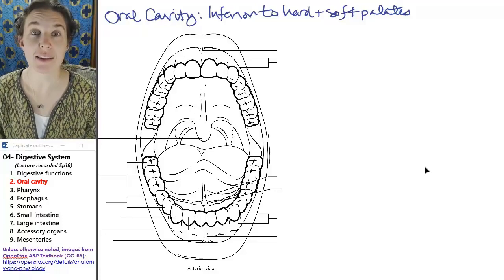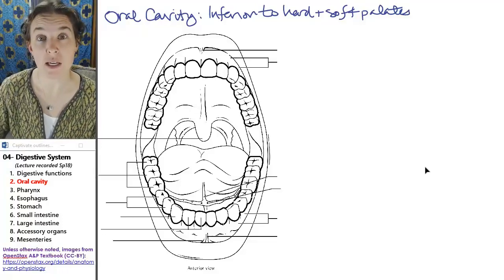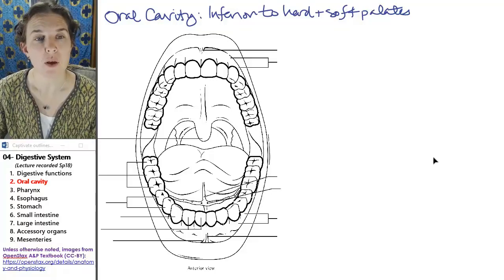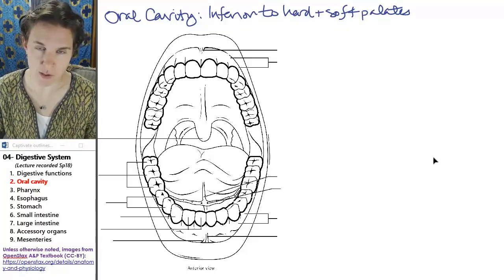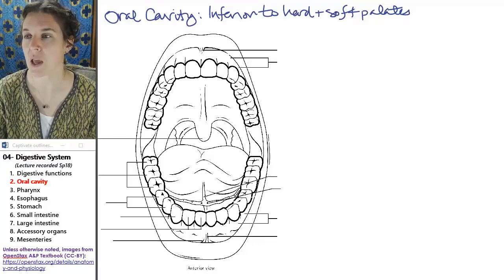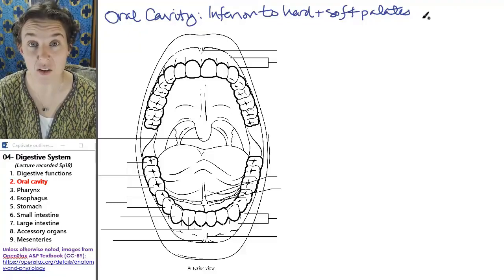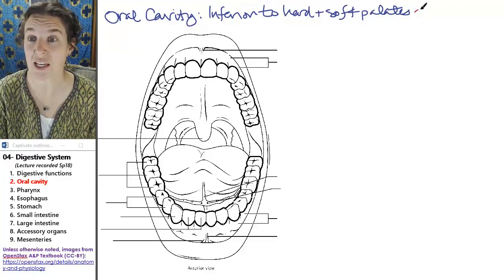All right, let's look at the anatomy of the oral cavity. First of all, in the oral cavity, we should probably define the oral cavity and we'll do that in a second. But in the oral cavity, you are going to have both mechanical and chemical digestion taking place.